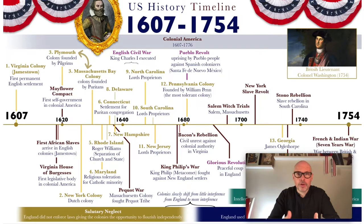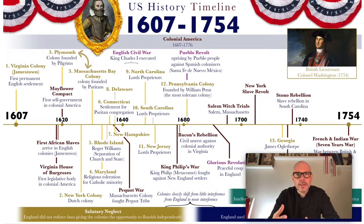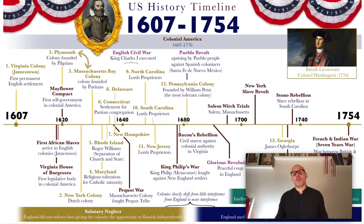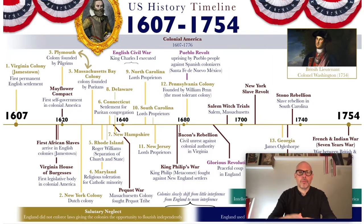1607 is chosen because that's when Jamestown, the first permanent English colony, was settled. The first couple of years were terrible. There was a starving period in 1609 to 1610 where people were literally eating corpses — there's even a story of a man who killed his wife to eat her. It was terrible times. They didn't know how to live off the land; these were business people, not survivalists.